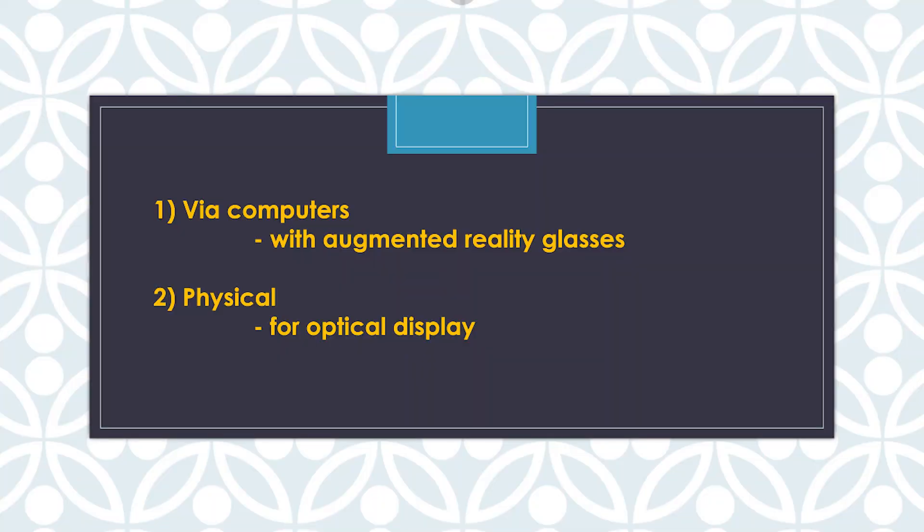There are two ways to create holograms: one is via computers with augmented reality glasses, and the second way is physically, which is used for optical displays. Depending on which method is used, there are two types of holograms: stereoscopic holograms and realistic holograms.